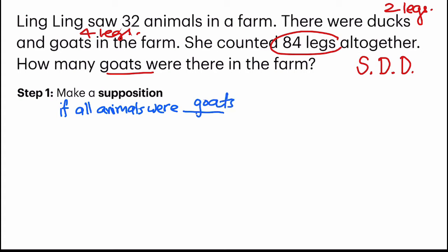Now, remember, if you make a supposition that they are all goats, our final answer would be ducks. So it's the other way around. We have to make a supposition that they were all ducks, because the question wants the number of goats. Suppose that all animals were ducks. How many legs are there altogether? It would be 2 times 32, because total there are 32 animals, and I will get 64.